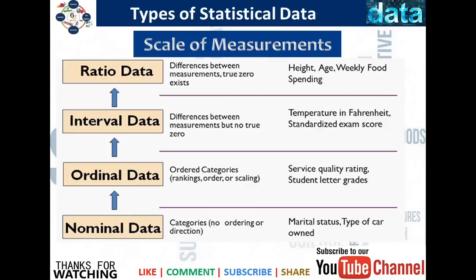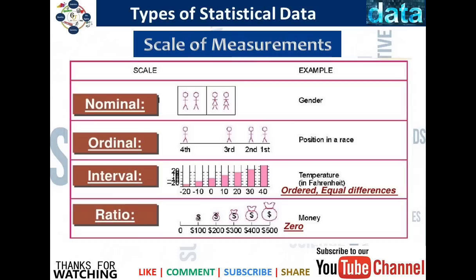Let's look at examples of nominal, ordinal, interval, and ratio data. Nominal data examples: marital status, type of car — these are simply labels. Ordinal data: service quality rating — you give a rating to it, but there is no exact standardized difference between ratings. Interval data: standardized exam scores and temperature in Fahrenheit — there are meaningful differences between values. Ratio data: height, weight, and spending — because there is a true zero.